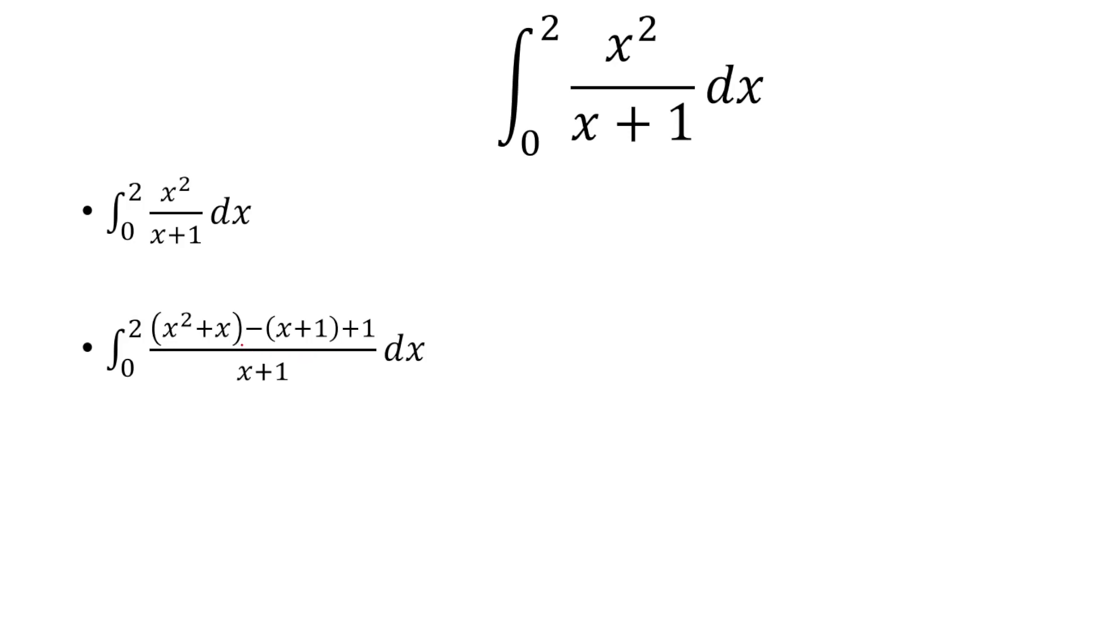Because here's why. We break this up into three separate fractions. We have x squared plus x over x plus 1, and then this one right here is x plus 1 over x plus 1, and then 1 over x plus 1.